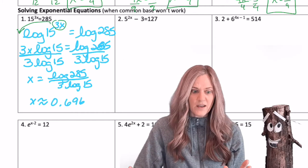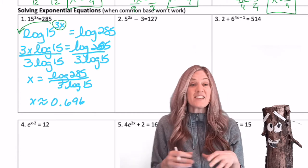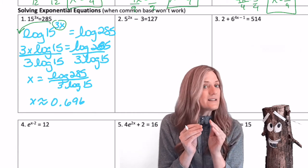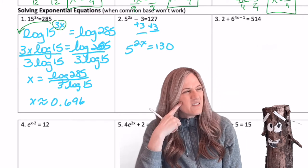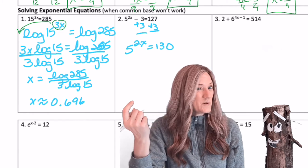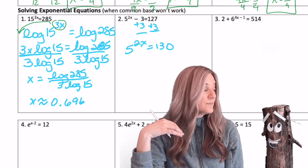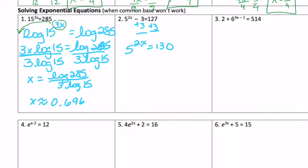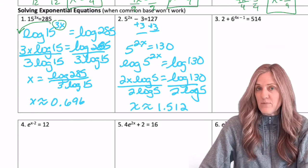As I look at number 2, I'm thinking, can I use a common base? Well, I don't even know yet because I don't have the exponential part isolated. So always isolate first. So I'm going to add the 3 to both sides. Kind of look at this and say 5 raised to the, well, 5 cubed is 125. So I don't have a common base. So then what are we going to do? Log it.